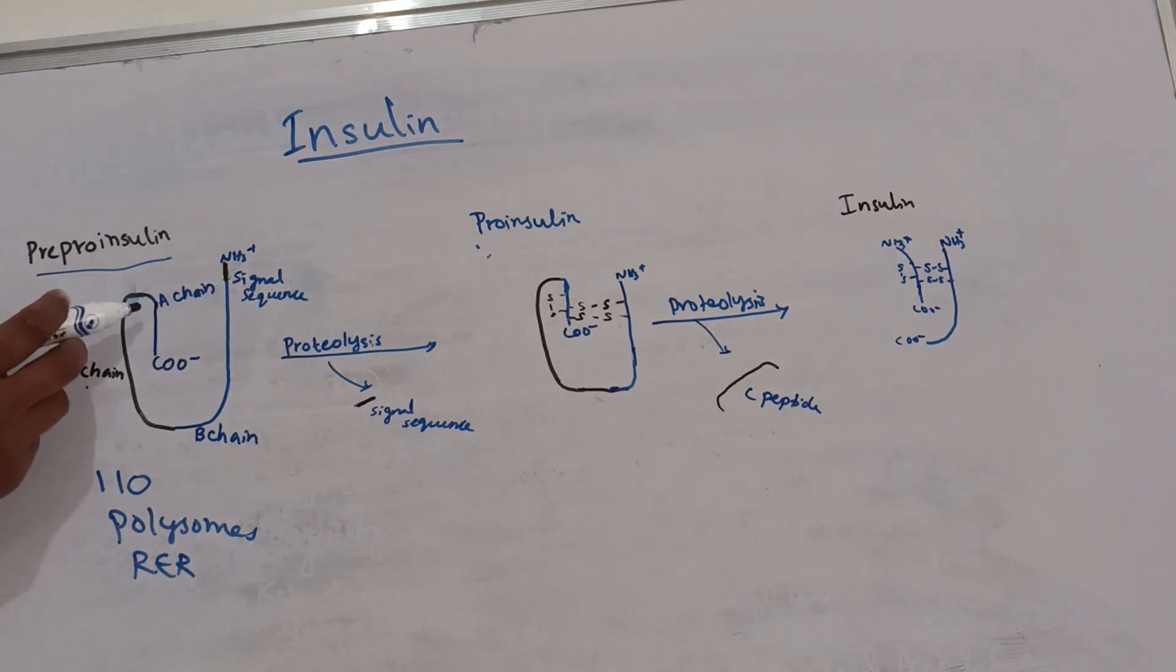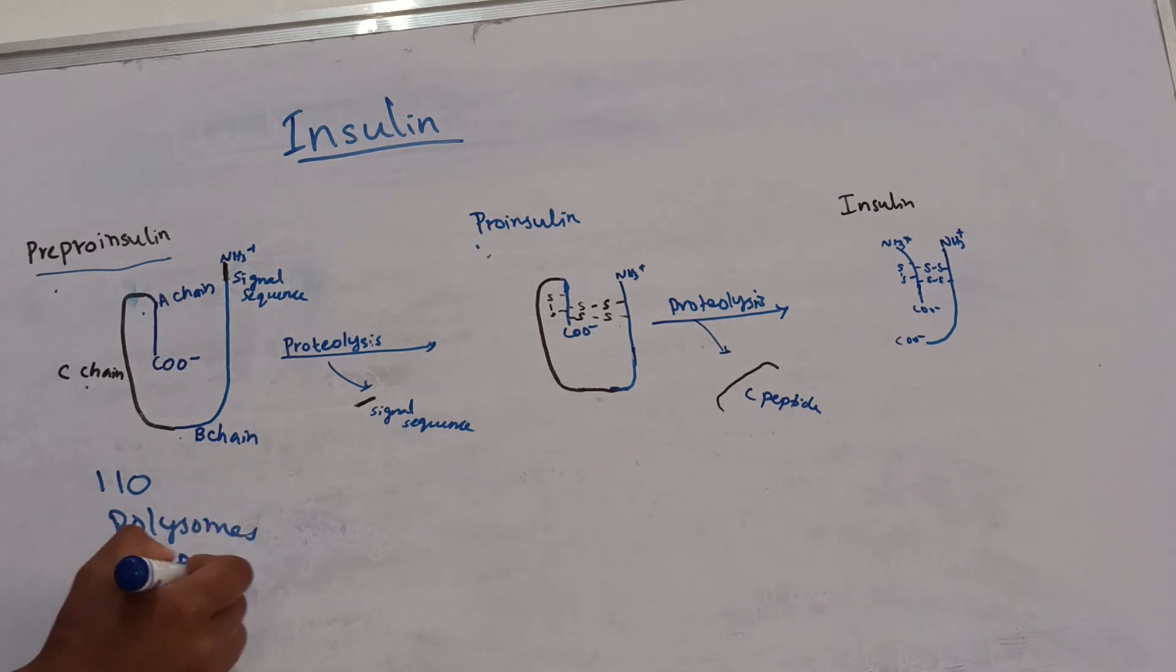It contains A chain, B chain, C chain and a terminal signal sequence or a signal peptide. After synthesis, it is transferred to the lumen of rough endoplasmic reticulum cisternae.